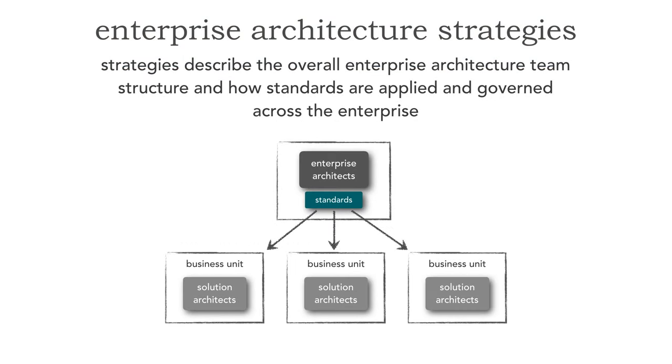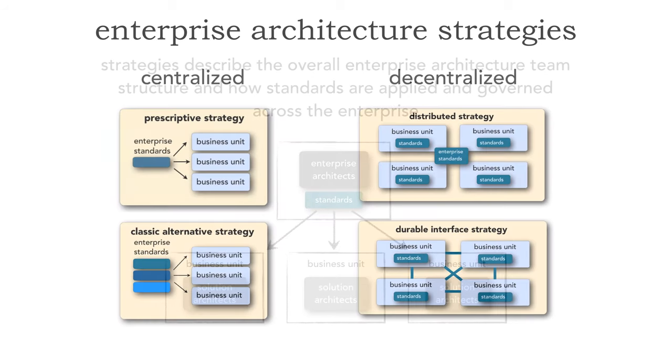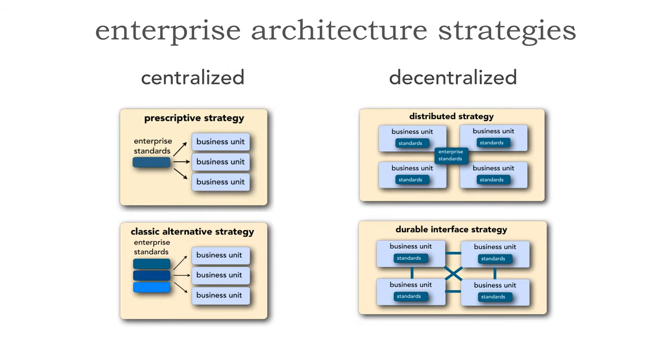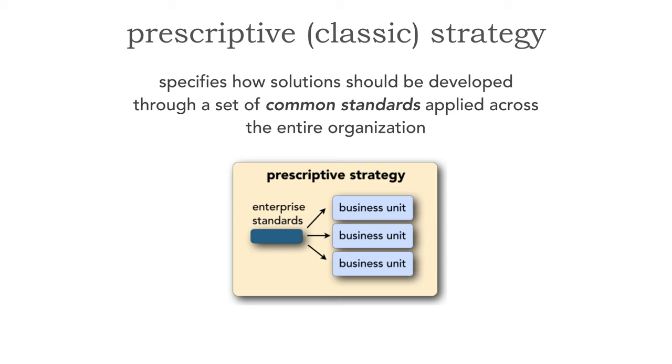As we learned in lesson 62, enterprise architecture strategies describe the overall enterprise architecture team structure, whether it's centralized or decentralized, and how standards are applied, governed, and defined across the enterprise. We saw that there were four total strategies. We're going to take a look in this lesson at the prescriptive strategy.